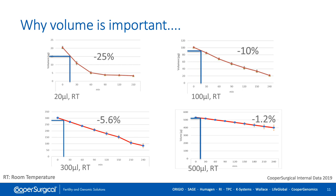Volumes of equilibration and vitrification media are crucial for the vitrification process. Here is our internal data regarding water loss during the equilibration step with different volumes of solution. Blue lines represent a 15-minute equilibration of a blastocyst. Drop size affects evaporation and consequently the consistency of the environment surrounding the gamete or embryo. Ideally, each case should be treated the same way in terms of time, volume, temperature, and media, to minimize variation and increase consistency. Larger volumes make mistakes less likely to affect the outcome.